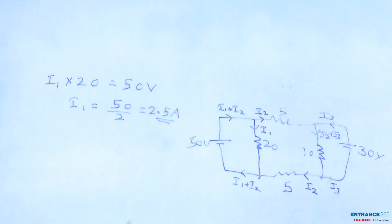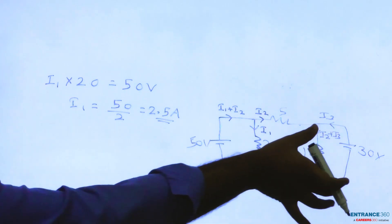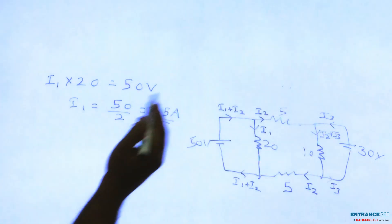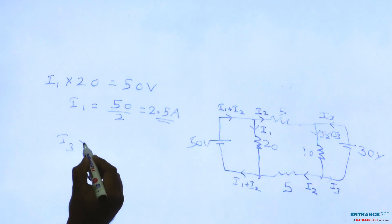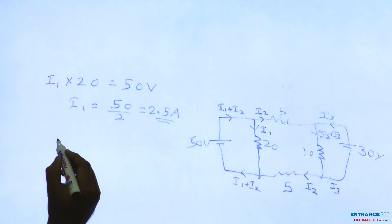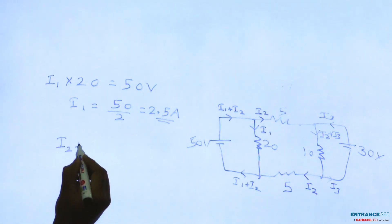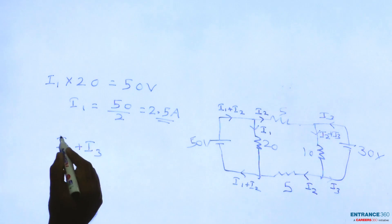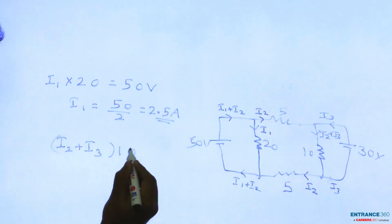Similarly, this 30 volt is parallel to 10 ohm. So I2 plus I3 times 10, the current flowing through 10 ohm is I2 plus I3 times 10 equals 30 volts.